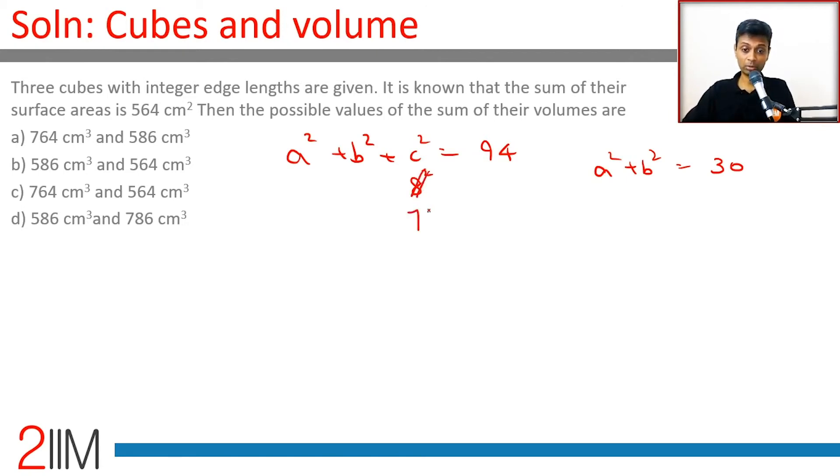Maybe with 7 it would be possible. 7 square is 49, so a square plus b square would be 45. 3 square is 9, 6 square is 36. These two add up to 45. One square doesn't work, two doesn't work, four doesn't work, five doesn't work, six works. So 3, 6, 7 is possible. Only two solutions are possible from the choices.